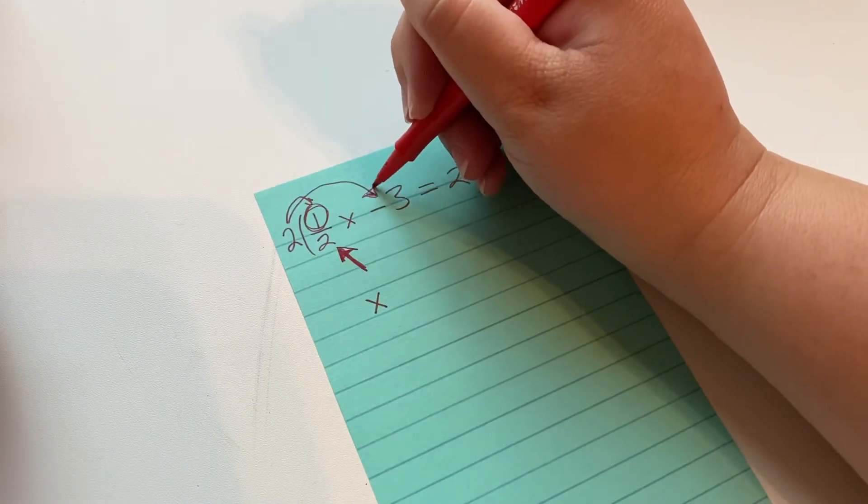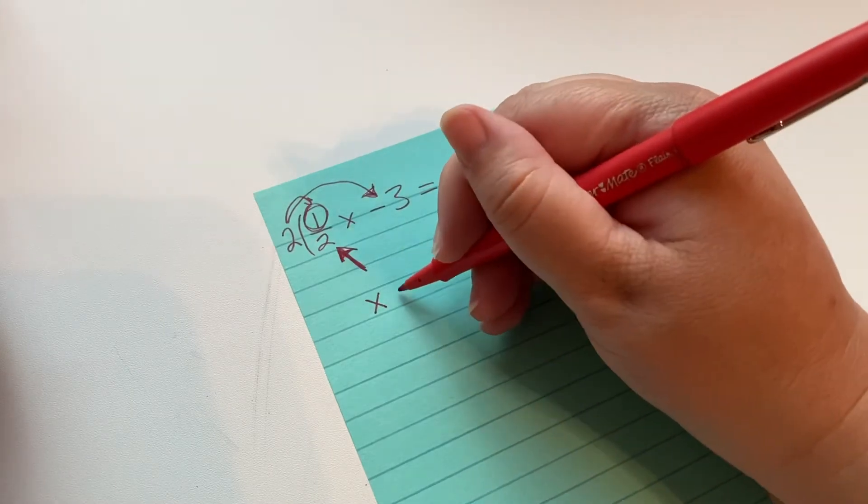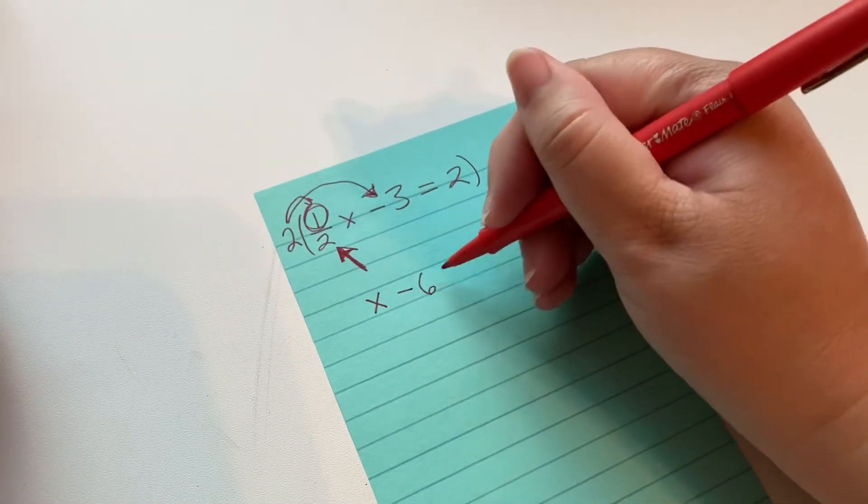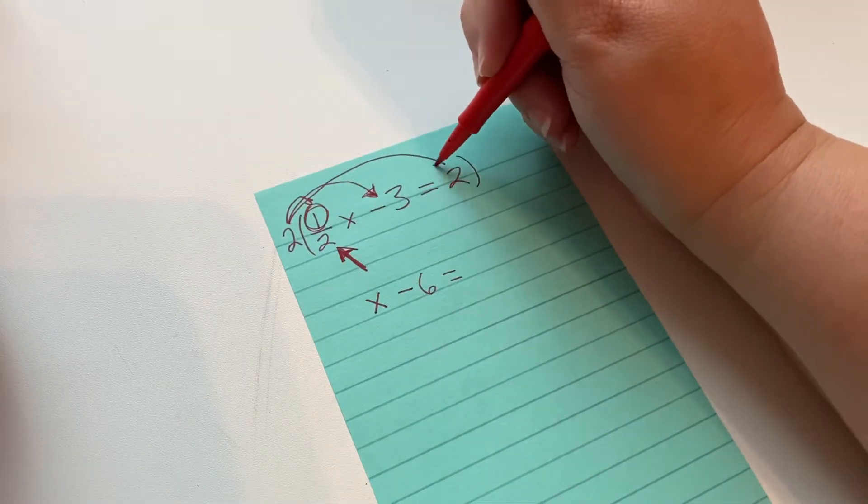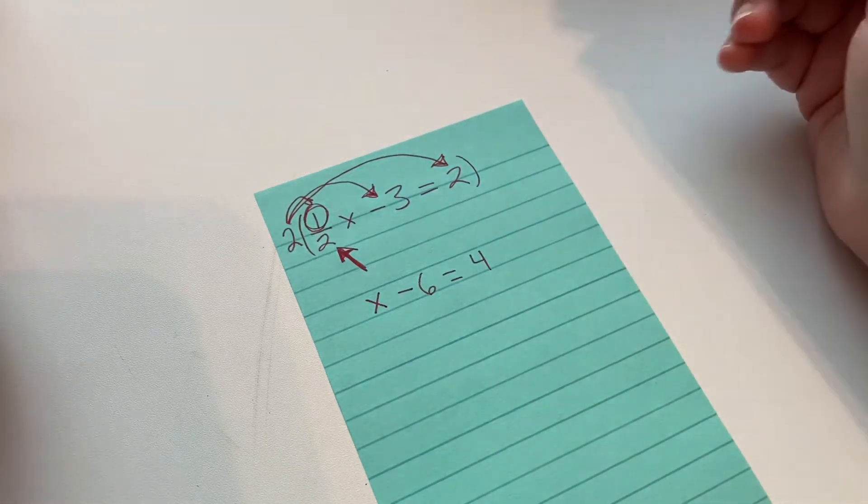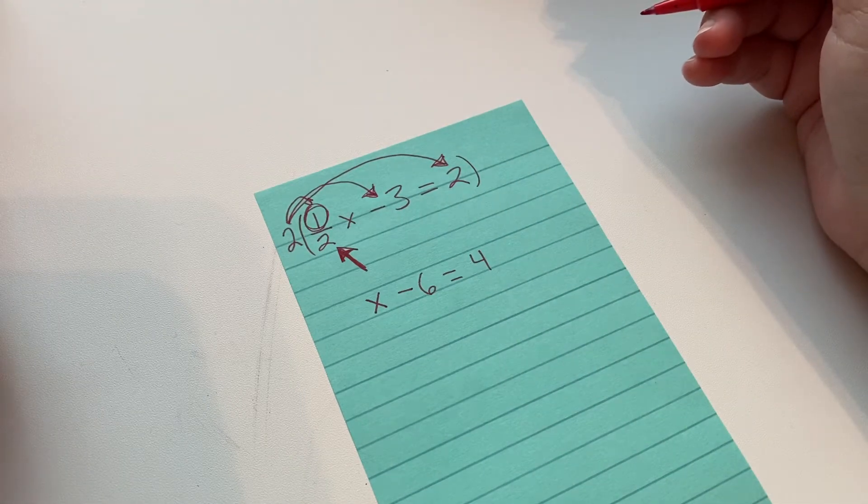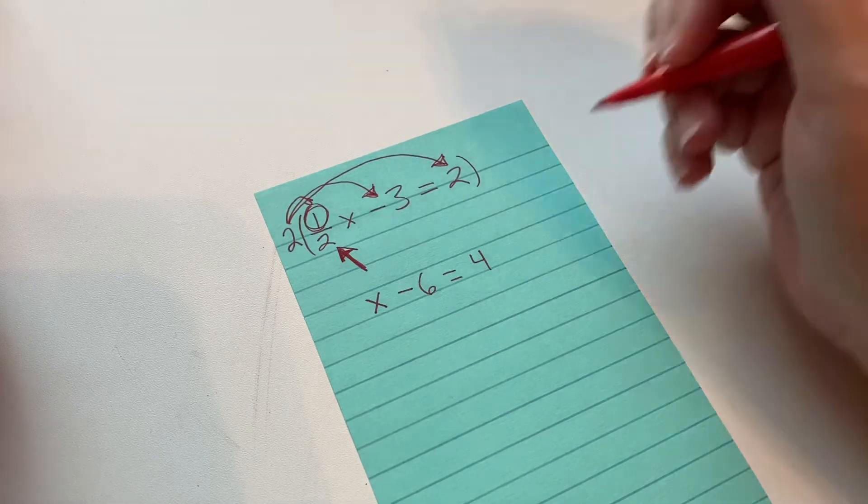Now we have to multiply 2 times negative 3. A negative times a positive is a negative and 2 times 3 is 6. And then we have to multiply way over here. 2 times 2 is 4. Now we have an equation that is something that looks a lot more similar to things we've seen and it's easier for us to solve.